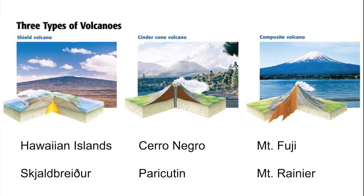Whereas cinder cone volcanoes are shorter, composite volcanoes are the big, majestic, awe-inspiring mountains — such as Mount Fuji near Tokyo and Mount Rainier in the Pacific Northwest near Seattle. Also called stratovolcanoes because they are so tall, they are formed by alternating layers of lava and pyroclastic material. They are steep and tall because their more viscous lava doesn't flow as far, and because their lava is more viscous, they generally have more explosive eruptions compared to shield volcanoes.